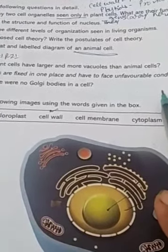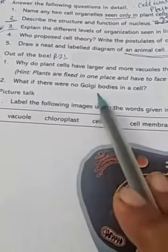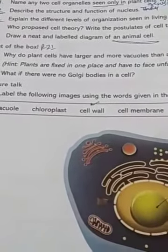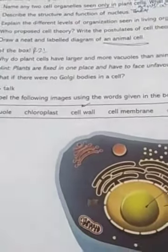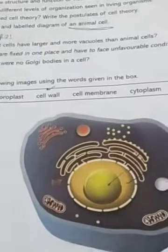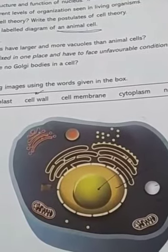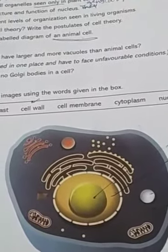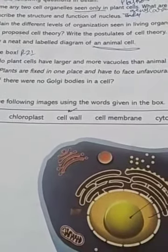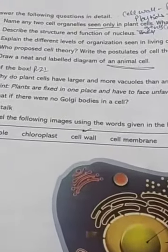The next question is: What if there were no Golgi bodies in a cell? We know that the role of Golgi bodies is the transport, modification, and storage of proteins and fats. Wherever these products are required, they are transferred to the targeted organ. Second, Golgi bodies also help in the production of lysosomes. The lysosome acts as a disposal bag in the cell.